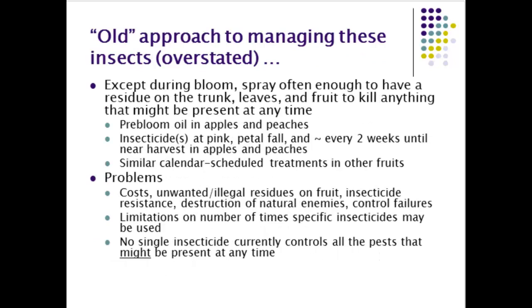The old approach was a calendar-based chemical pesticide spray program: except during bloom, you would spray often enough to maintain a residue on the trunk, leaves, and fruit to kill anything present. The problems with this approach are that it costs more than necessary, you get more residues on fruit than you want, you cause resistance problems to develop in insect populations, you destroy all the natural enemies, and you can't legally use products as many times as that schedule might require. There are also no single insecticides that kill everything.